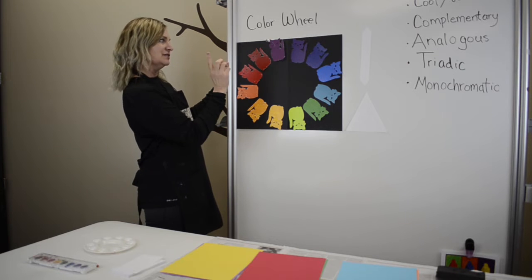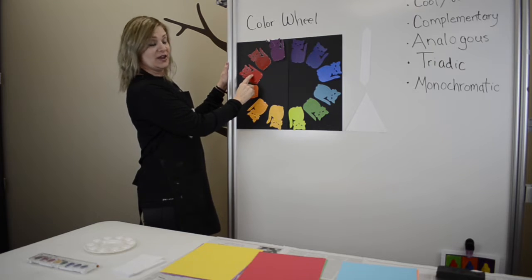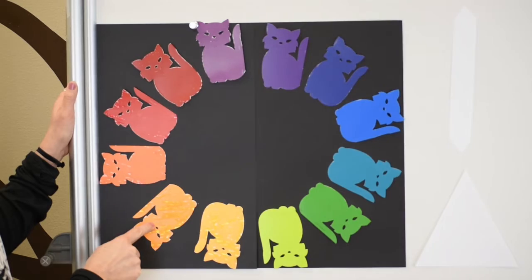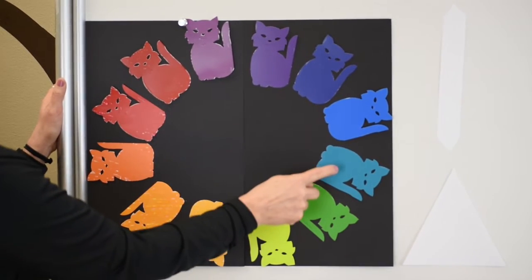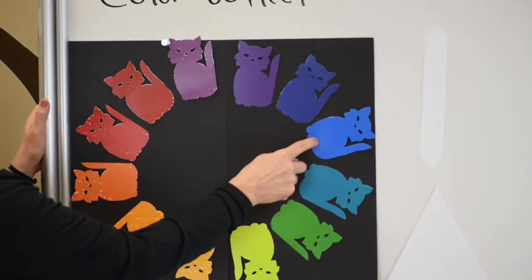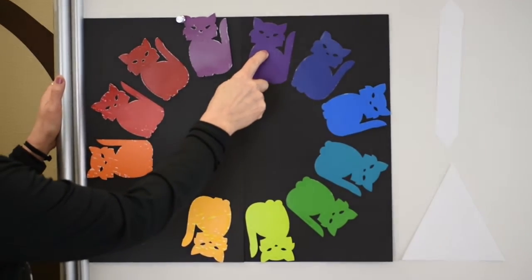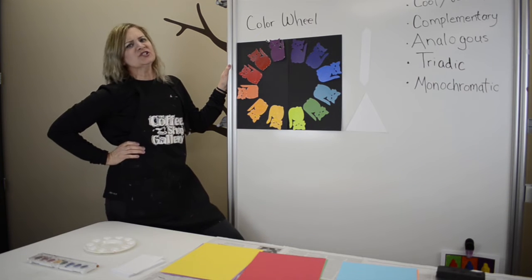I started out, I've got my red, I've got my red orange, orange, yellow orange, yellow green, green, blue green, blue, blue violet, violet or purple, and red violet. Now when we look at our color wheel, I arranged it this way because this is part of my color schemes.